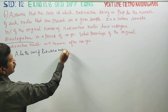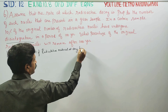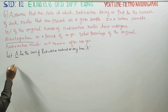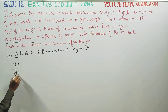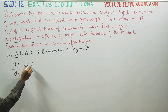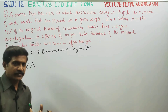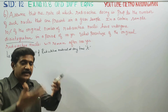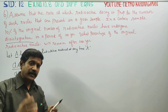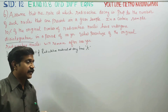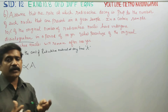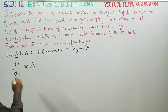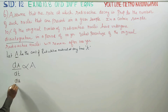At any time T, the rate of change in radioactive material is always proportional to the amount present. As time goes on, the material will disintegrate. So dA/dt is proportional to A.